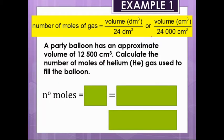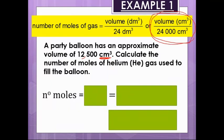Right. Let's have a practice of these calculations then. So I've got the equation there at the top again, just in case you wanted it. A party balloon has an approximate volume of 12,500 centimetre cubed. So first step, it's using centimetre cubed. So which one are we going to use? Because centimetre cubed is there, we're going to use this one here. So we're going to divide whatever the volume is by 24,000. So we're going to have the 12,500 divided by the 24,000. Type that into a calculator.